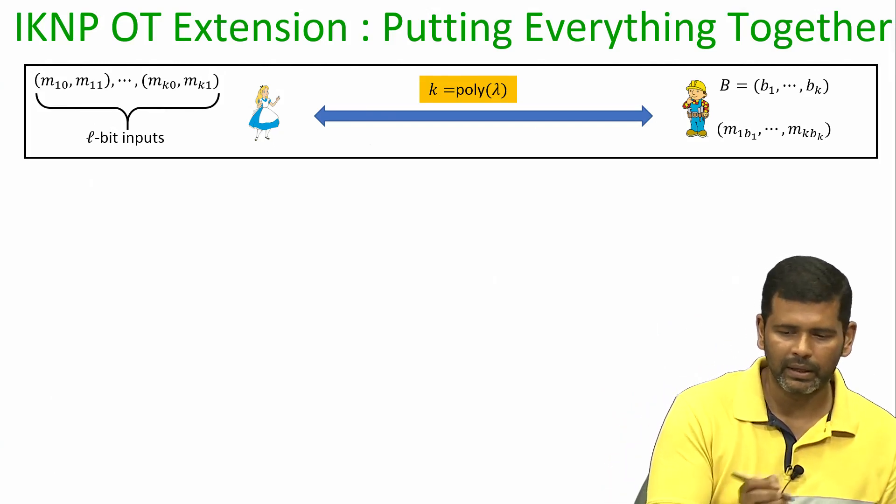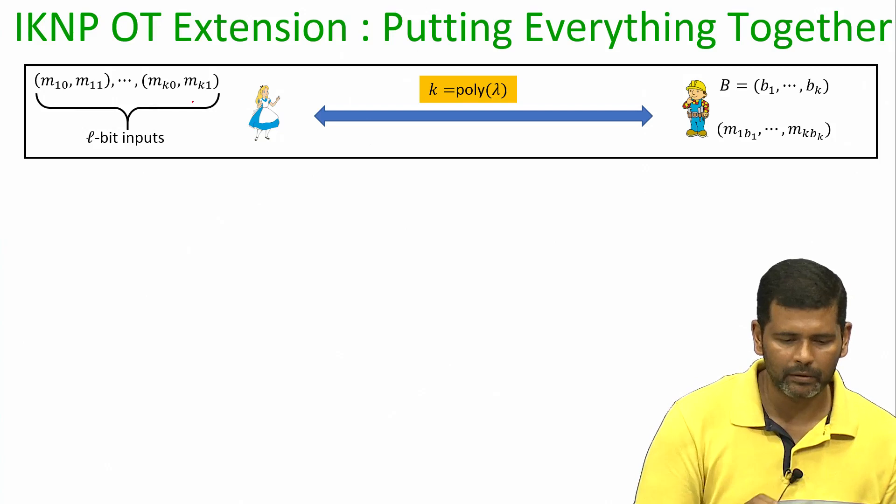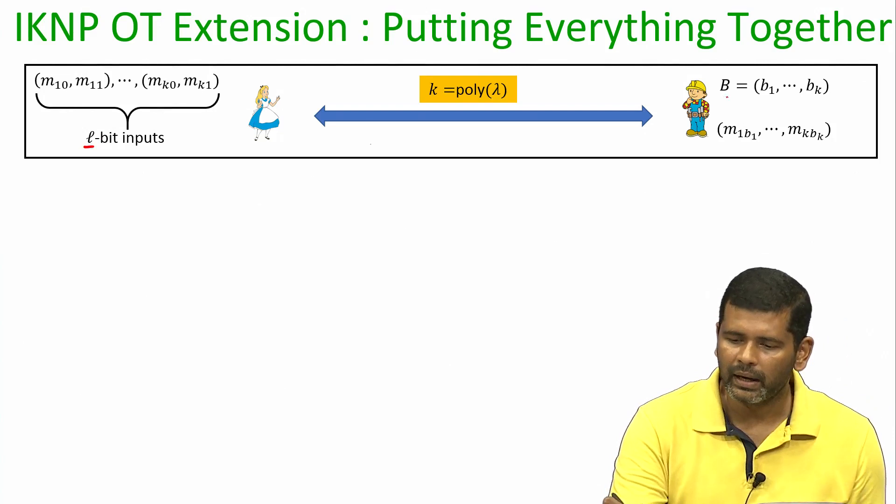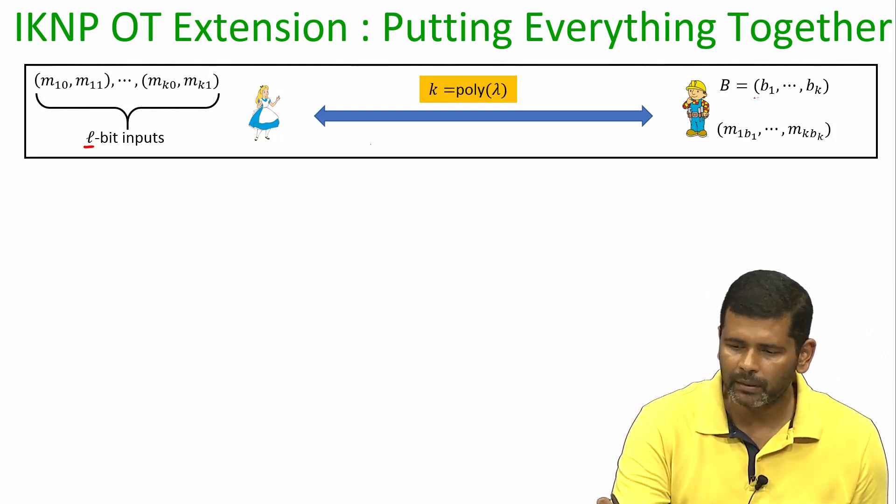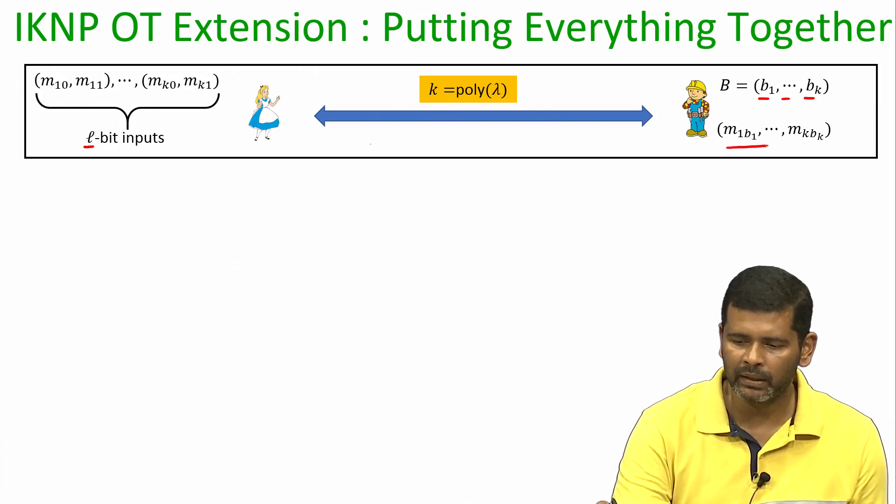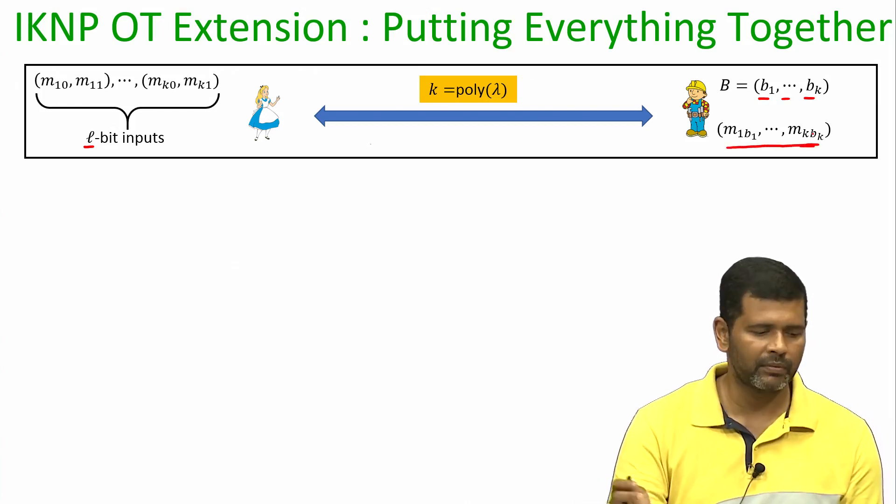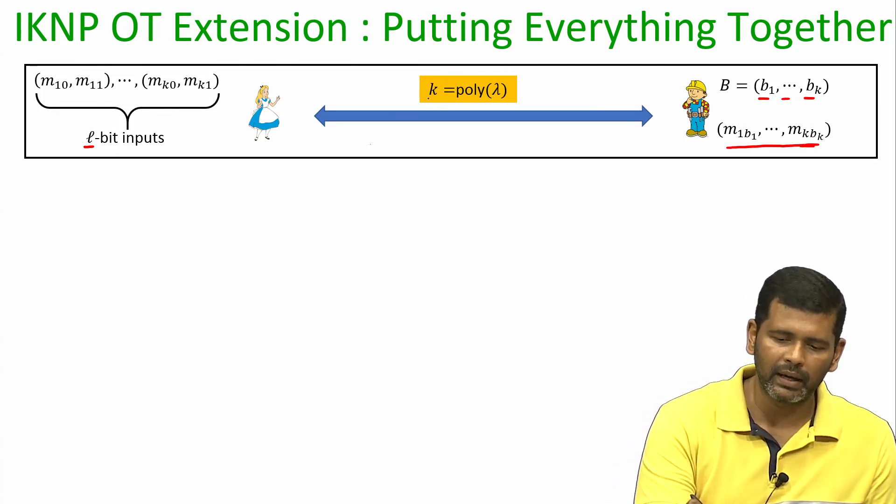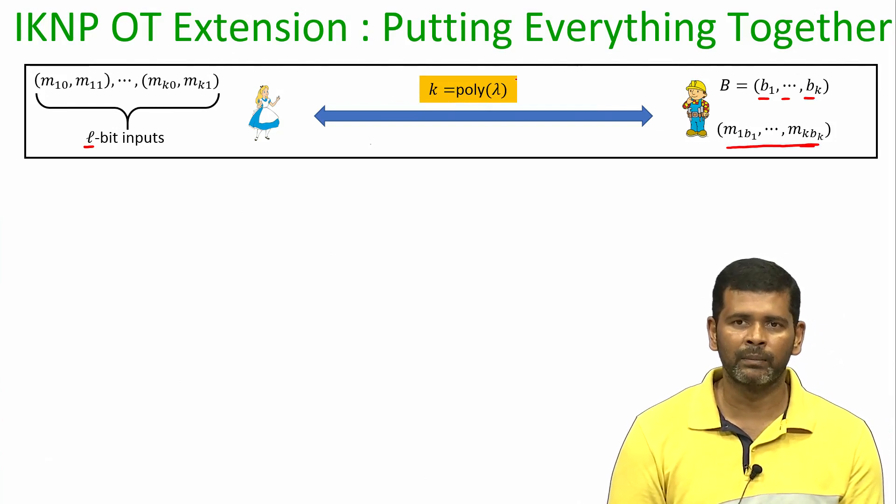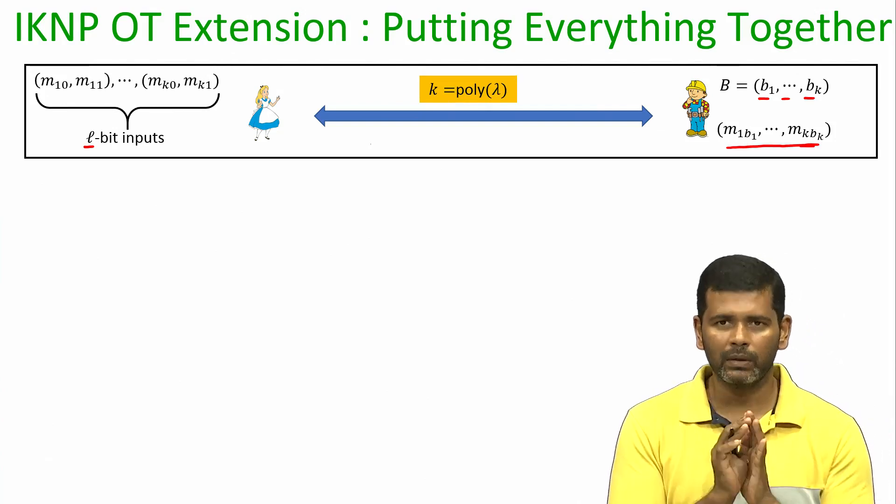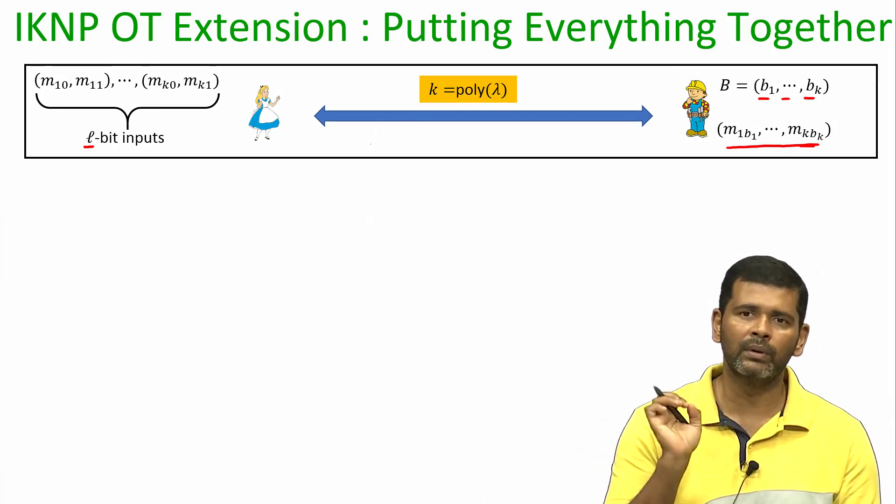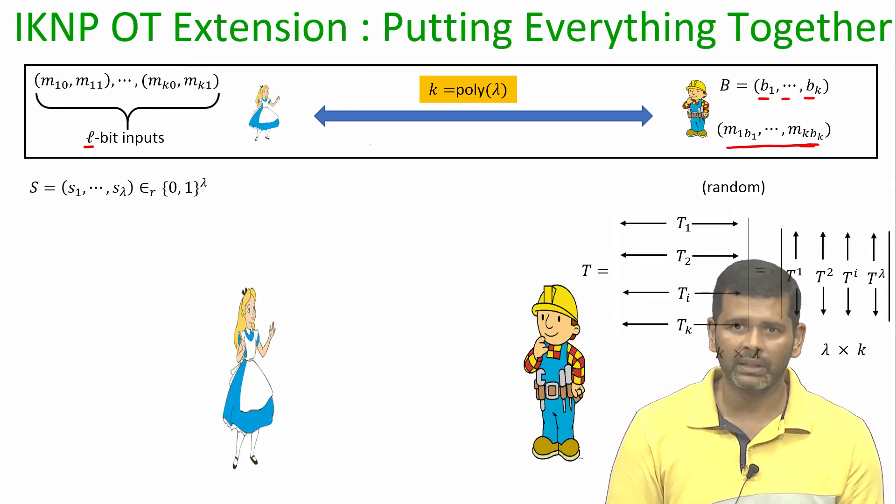We wanted to get the following done: Alice had k pairs of messages, each message was of length l bits, and for each pair Bob has a choice. We want to ensure that depending upon his choice bit for each pair he should get the corresponding messages, and k here is some polynomial function of your security parameter lambda. We do not want to run k instances of OT, but we want to run only lambda instances of OT. How can this be done?